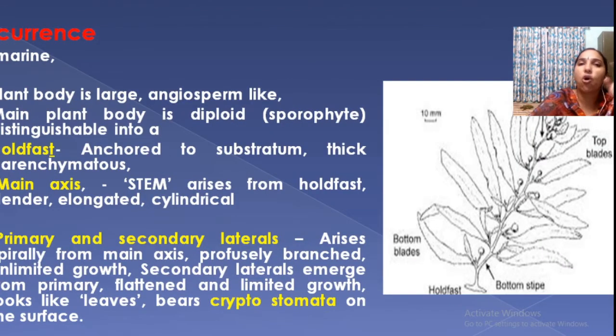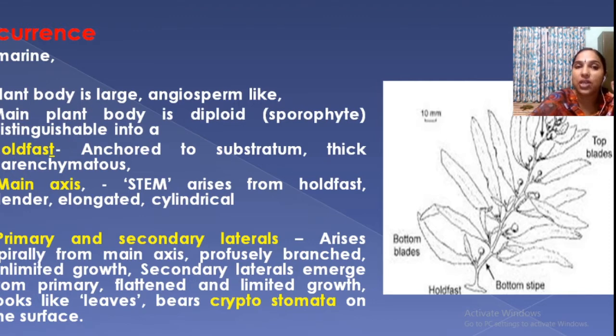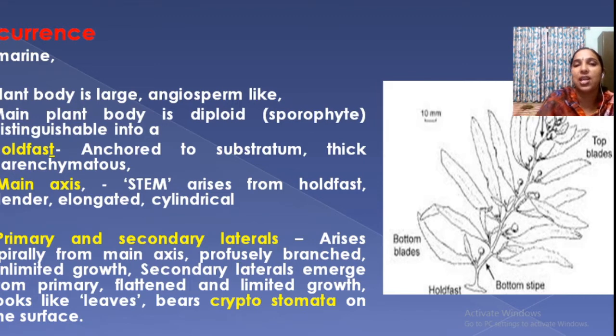Sargassum is a marine form and the plant body is large — angiosperm-like, like our higher plants, very large and tree-like.